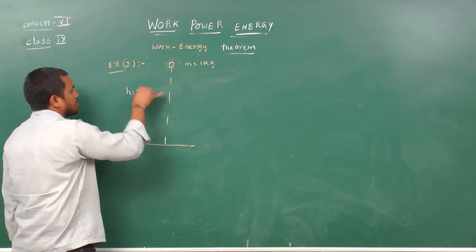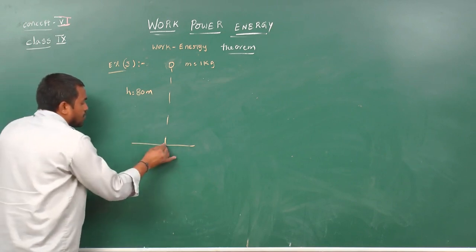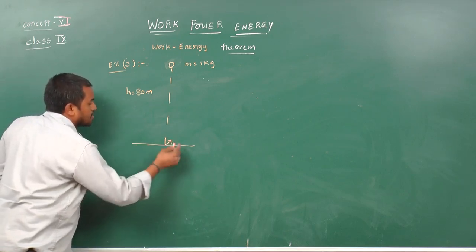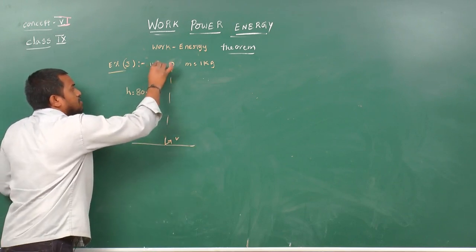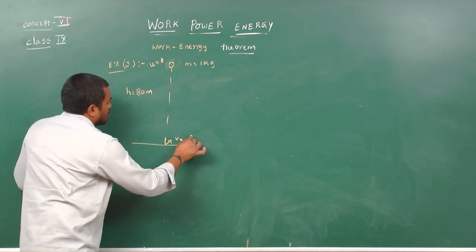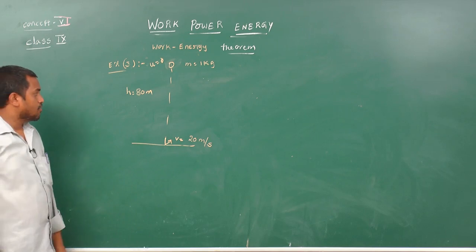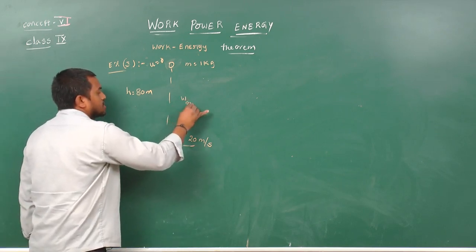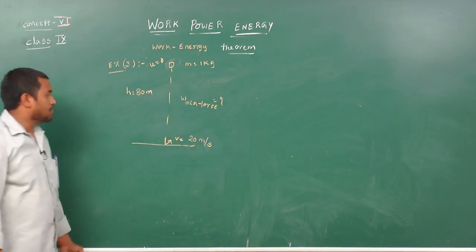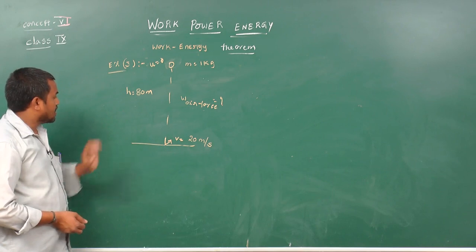Example 3: A ball of mass 1 kg falls from a height of 80 meters. Just before reaching the ground — since it is a freely falling body, initial velocity is 0 — its final velocity is 20 meters per second. Calculate the work done by the air resistance force. Initial kinetic energy is 0.